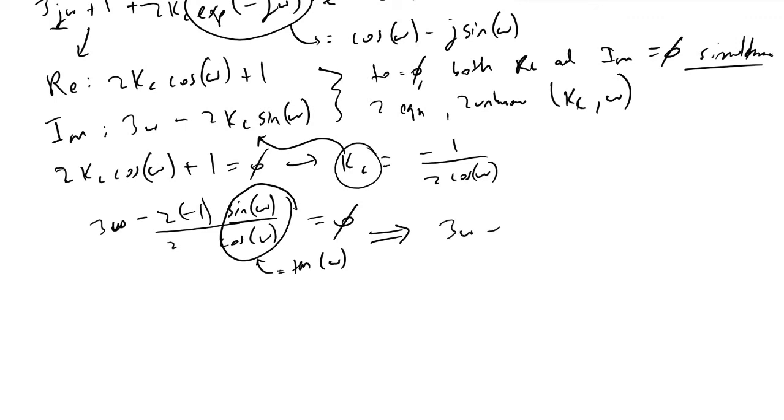This is one equation with one unknown. You can type this in Wolfram Alpha or perform the trig necessary to evaluate, but what we end up finding is that ω will equal 1.76.